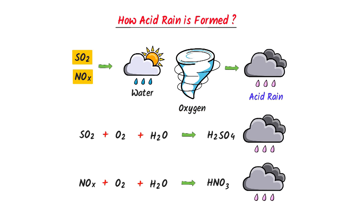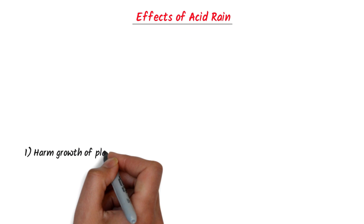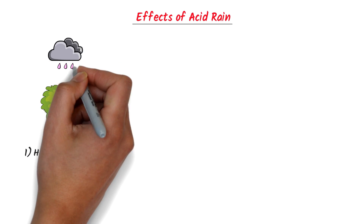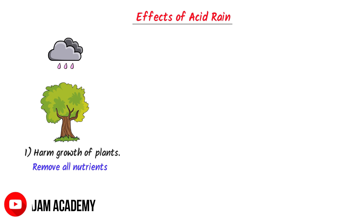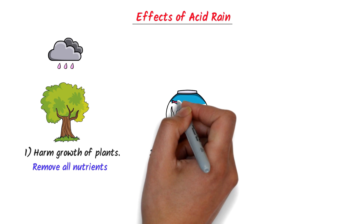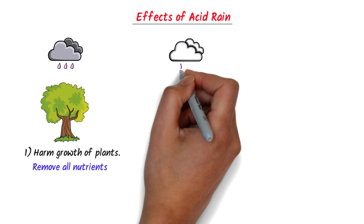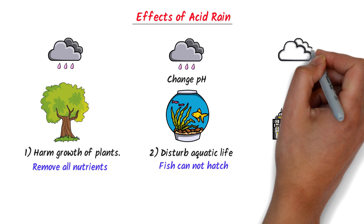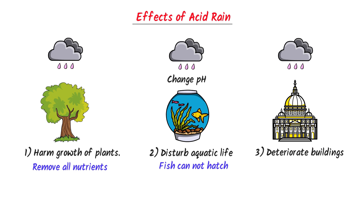Finally, let's learn about the effects of acid rain. Firstly, acid rain harms the growth of plants. Plants need essential nutrients for normal growth, but acid rain removes all these nutrients from the soil. Secondly, acid rain disturbs the aquatic environment like streams and lakes. For example, if acid rain changes the pH of a lake to 5, most fish cannot hatch. Thirdly, it can cause buildings, statues, and bridges to deteriorate faster than usual — for example, many parts of the Taj Mahal have been damaged by acid rain.